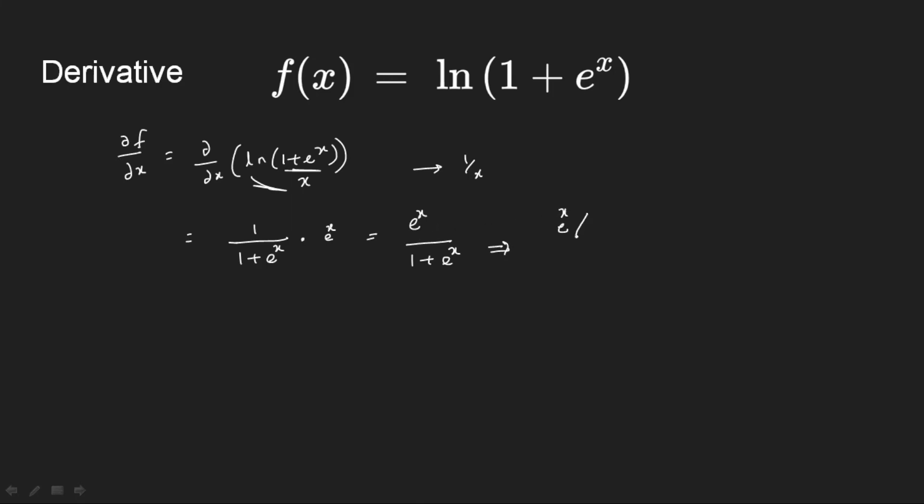e^x divided by e^x divided by 1 + e^x divided by e^x. So the numerator becomes 1 and the denominator becomes e^(-x) and here it becomes 1 plus 1.